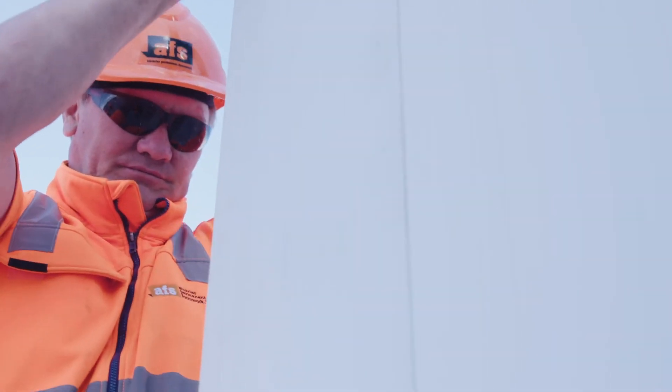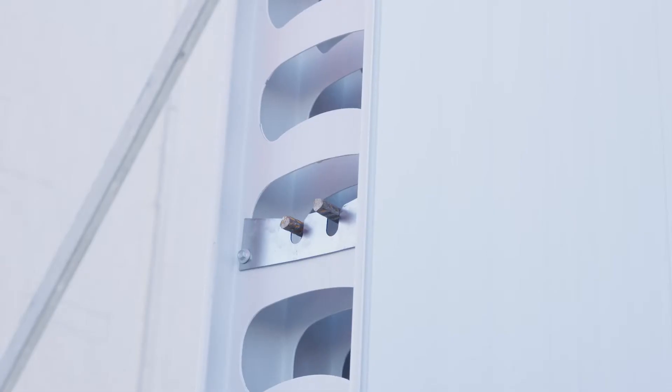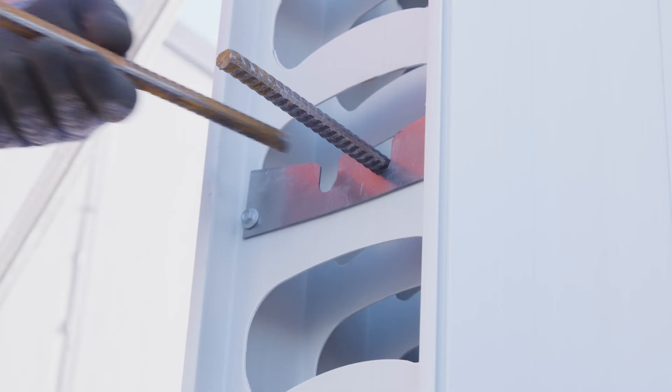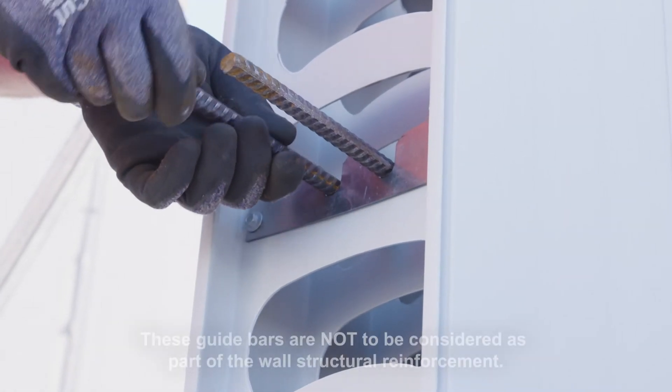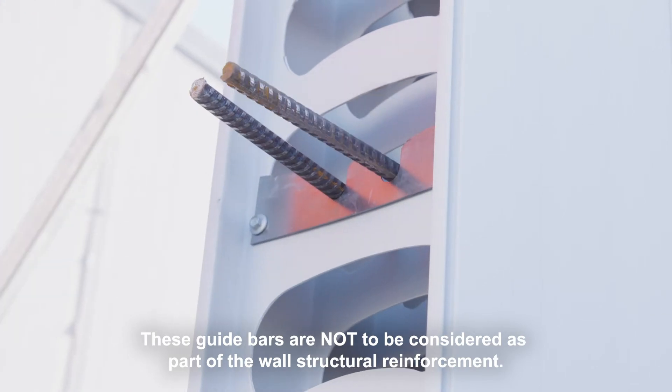Slide an additional panel into place to allow the alignment bars enough clearance to overhang the locator strip. Slide the alignment bar through the locator. These guide bars are not to be considered as part of the wall structural reinforcement.